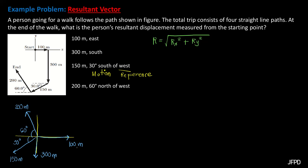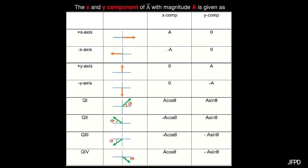To solve for the x and y components of the given vectors, let's use this table as a guide. For a vector A having a magnitude of A, the x and y components can be solved as shown in the table.